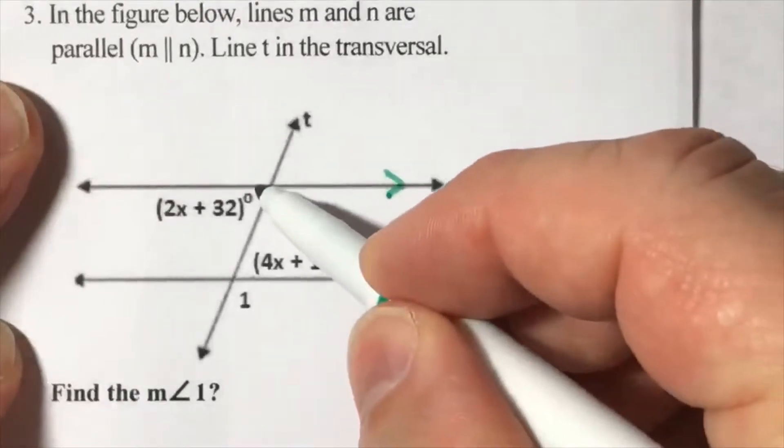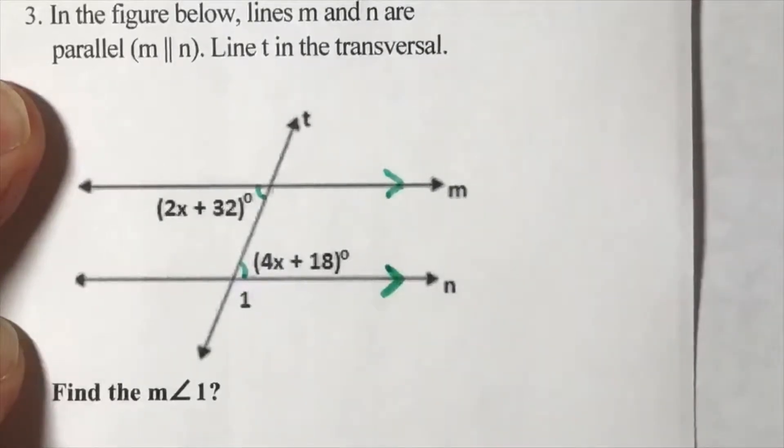These angles here are alternate interior angles and they are equal. So we got to find the measure of angle one.